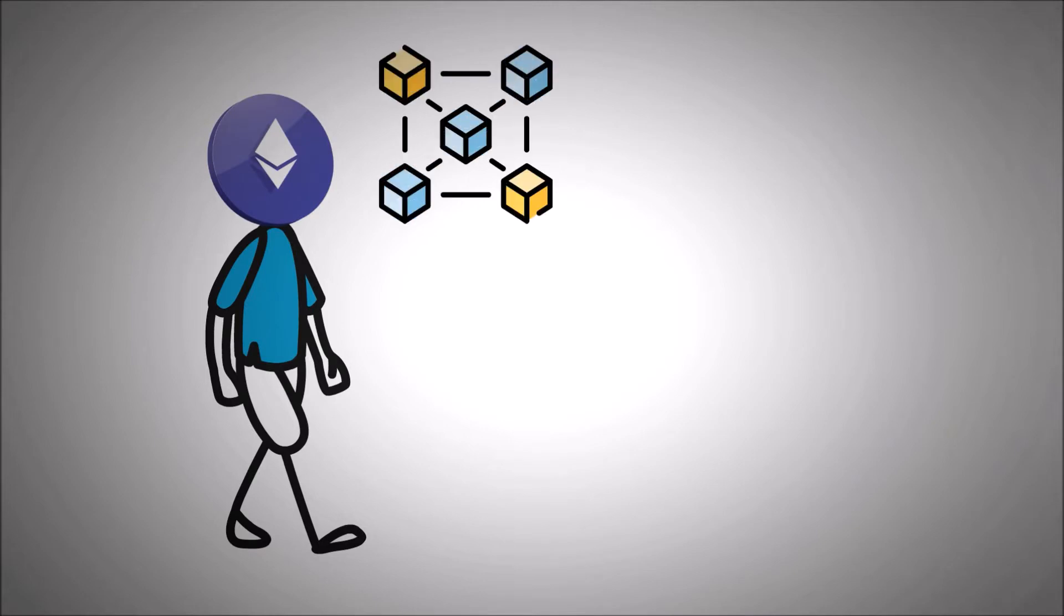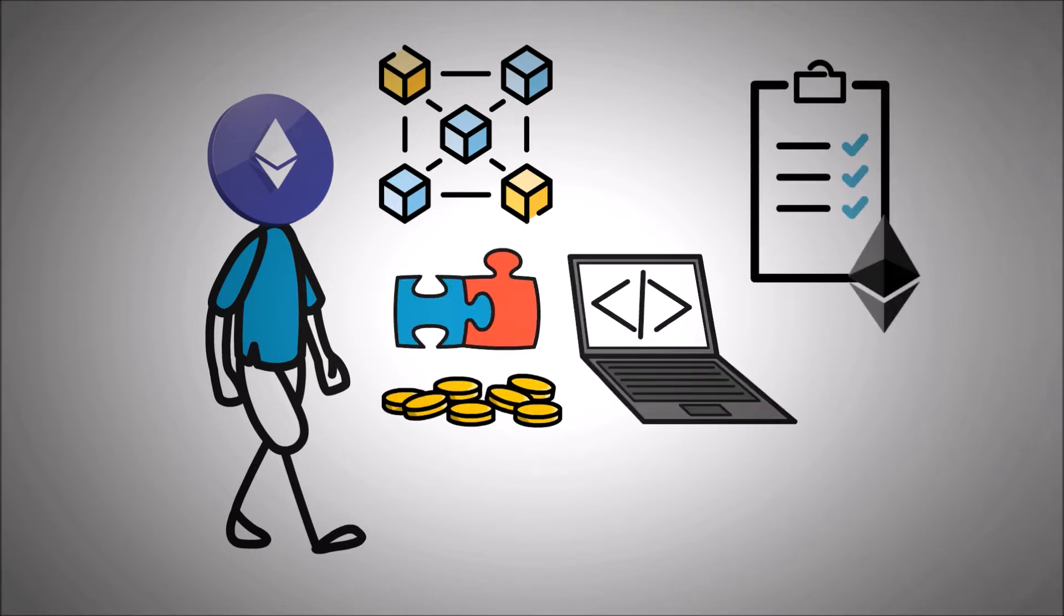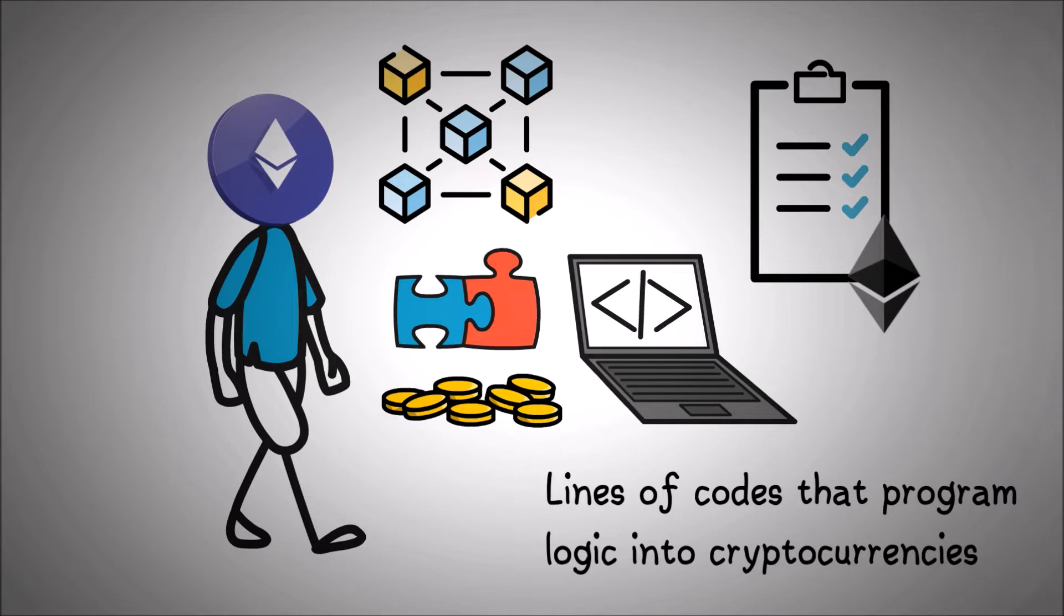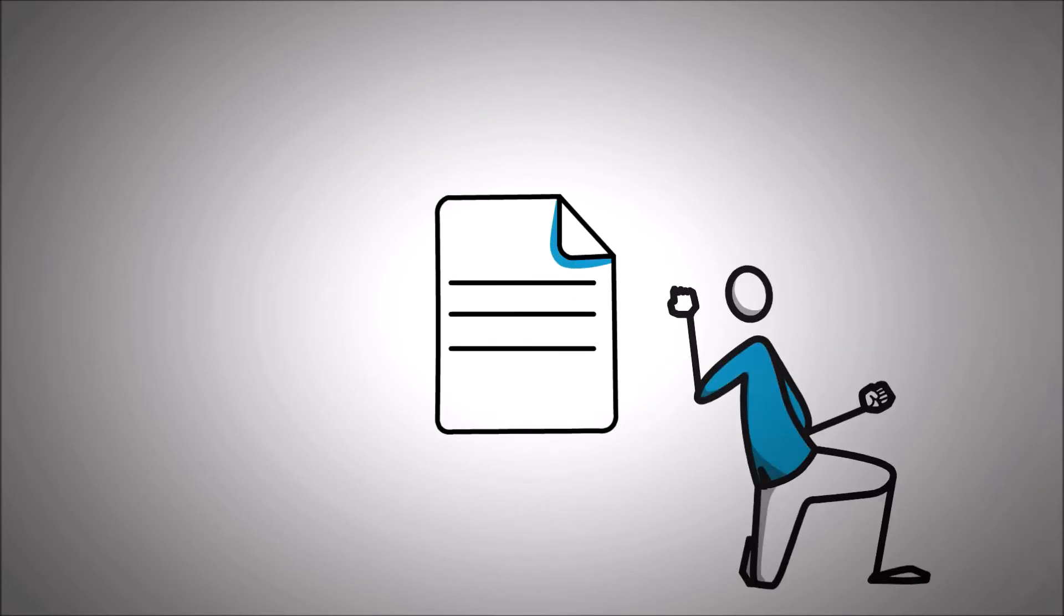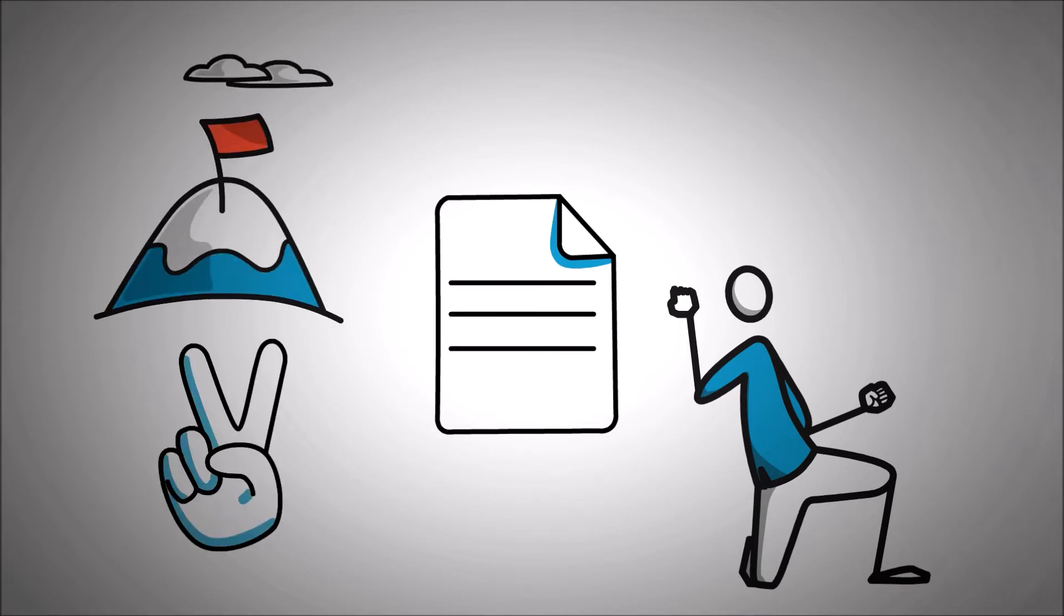And this is where the mighty Ethereum enters the stage. Ethereum is a blockchain platform that gives a framework to make cryptocurrency programmable using smart contracts. Smart contracts are the lines of code that program logic into the cryptocurrencies. These lines of code are publicly available for verification. The cryptocurrencies programmed with lines of code will behave exactly as they are programmed. This will ensure that the intended goal of the transaction is achieved.